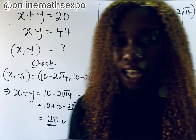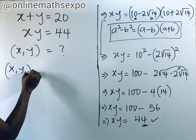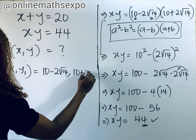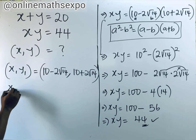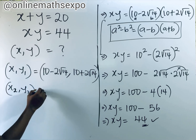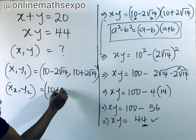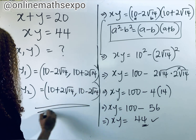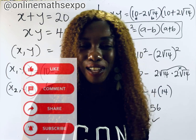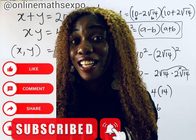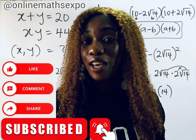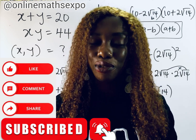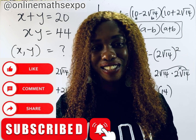So in conclusion, we have that the values of x and y are: first set — x equals 10 minus 2 root 14 and y equals 10 plus 2 root 14; second set — x equals 10 plus 2 root 14 and y equals 10 minus 2 root 14. Both sets are correct. I hope this really helps you. Don't forget to like and comment. Thank you for always choosing to learn with us. I appreciate you. I'll see you in our next class. Bye!